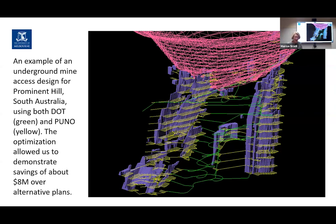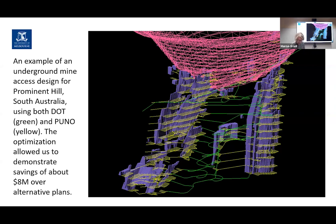When we started getting amounts like this, we realized how valuable our software was going to be for mining companies. Around 2010 we decided we'd like to commercialize our software — not just have it with companies through Linkage Grants, where the university owns any IP or software tools. We took a brave step and in 2010 established a spin-off company called Mine Optimize.